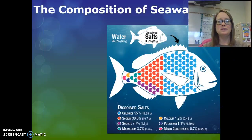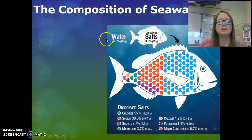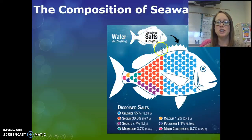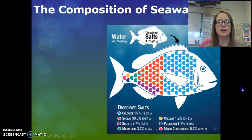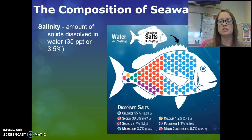Ocean water is made of water and salt, but salts are not just sodium chloride — table salt — but are made up of other minerals as well. You can see in this diagram that water makes up 96.5% of the ocean water, whereas the other 3.5% is dissolved salts, which we can further break down into different elements. The term we use for the amount of dissolved solids is salinity, which is 3.5% or 35 parts per thousand.